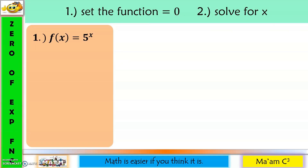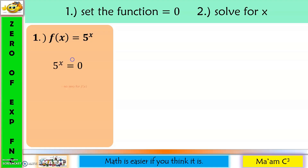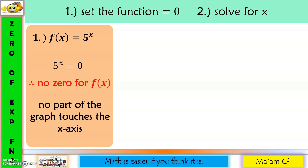Number one, first step: let us equate the function equal to zero. Now think of a number that will make the function equal to zero. Let us substitute values for x. If x equals negative one, five raised to negative one equals one over five — not zero. If x equals zero, five raised to zero equals one — also not equal to zero. If x equals one, five raised to one is still five — not equal to zero. Therefore, there is no number that will make our function equal to zero, so there is no zero for f of x, meaning there is no part of the graph that touches the x-axis.